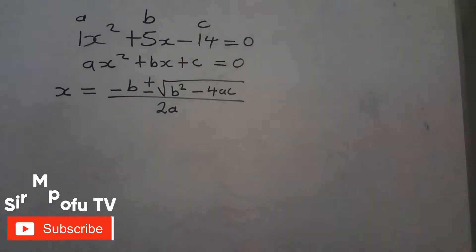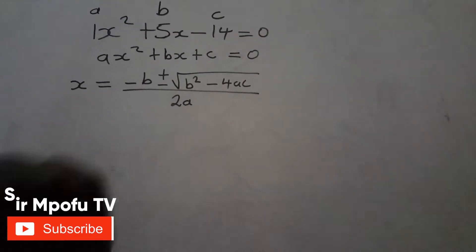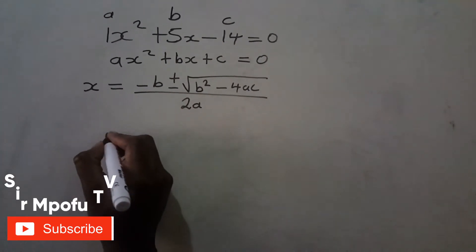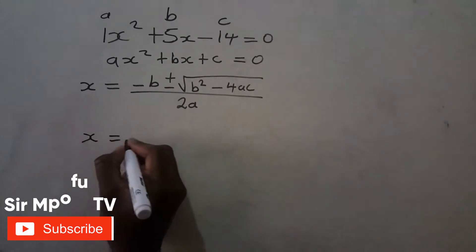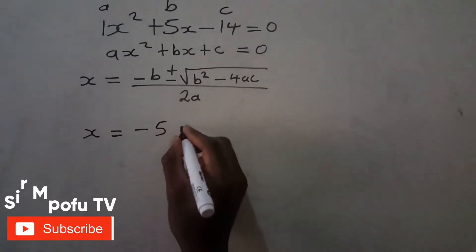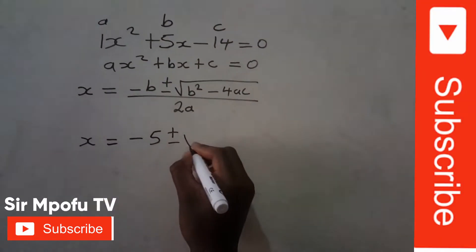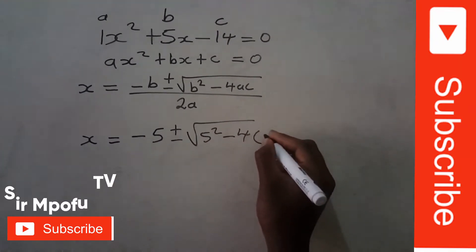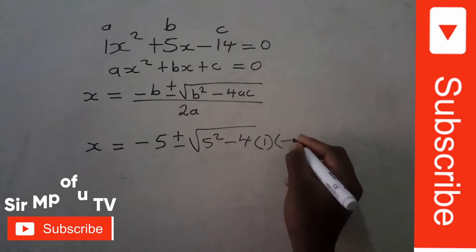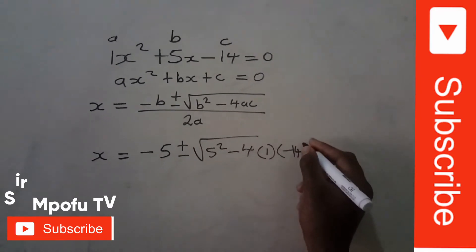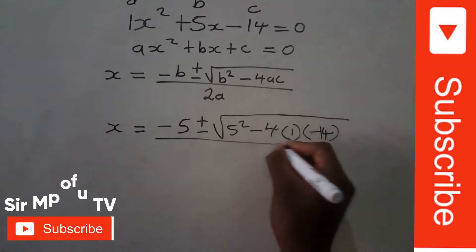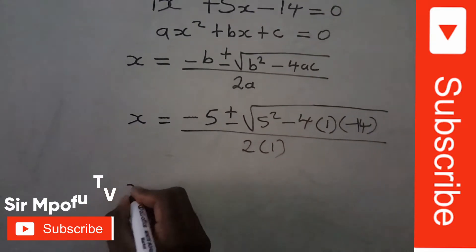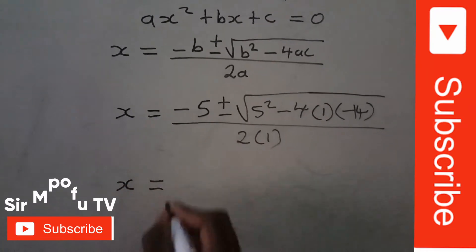Now your first step when working is to substitute these values into your formula. So we substitute to get: x equals negative 5 plus or minus square root of negative 5 squared minus 4 times 1 times negative 14, all over 2 times 1.